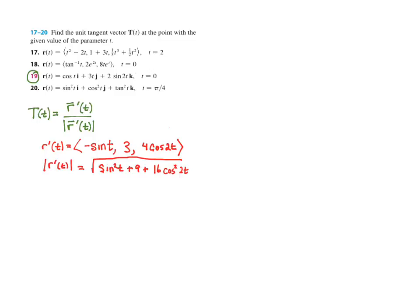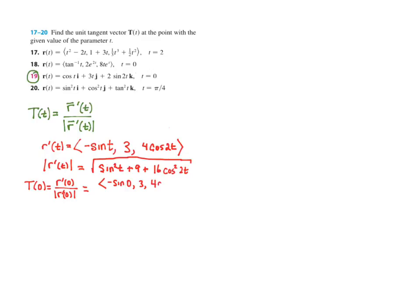Now specifically, I'm looking for the value of the unit tangent vector at t equals 0. So capital T at 0 would be r prime at 0 over the magnitude of r prime at 0. If I plug in 0 into r prime, I get negative sine of 0, 3, and 4 cosine of 2 times 0. And plugging 0 into the magnitude gives the square root of sine squared of 0, plus 9, plus 16 cosine squared of 2 times 0.